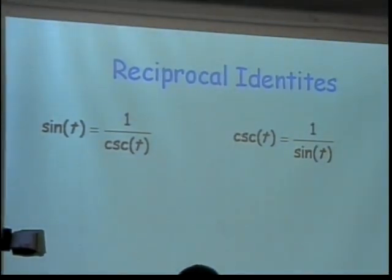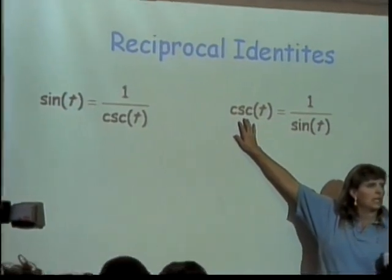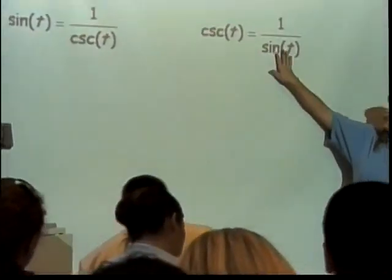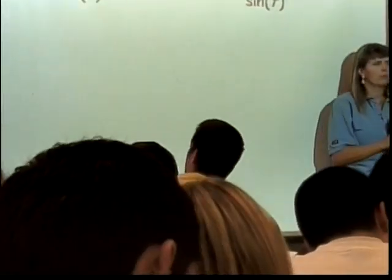Another of your trig functions is written as CSC. That stands for cosecant, and it's 1 over the sine of the angle. Cosecant of the angle is 1 over the sine of the angle.